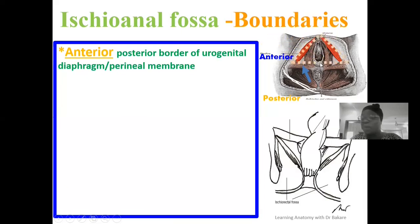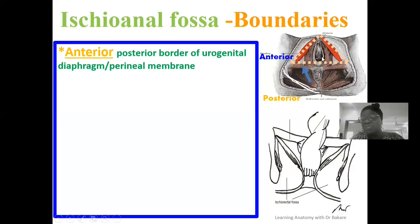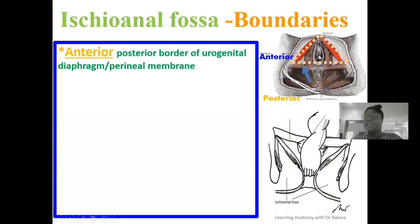The anteriorly placed urogenital triangle contains the urogenital diaphragm, which takes a triangular configuration. The posterior pole of the urogenital diaphragm aligns with the anterior pole of the ischioanal fossa. We also have the perineal membrane, which lines the inferior border of the urogenital diaphragm and also takes a triangular configuration, its posterior end aligning with the anterior pole of the ischioanal fossa. So the anterior border of the ischioanal fossa is formed by the posterior borders of structures within the urogenital triangle.